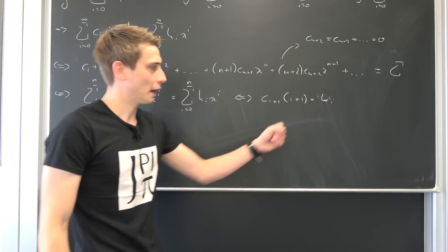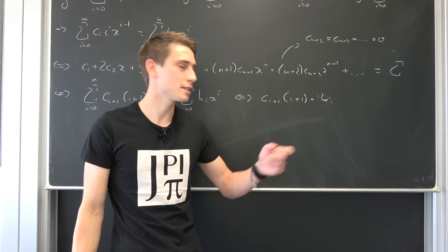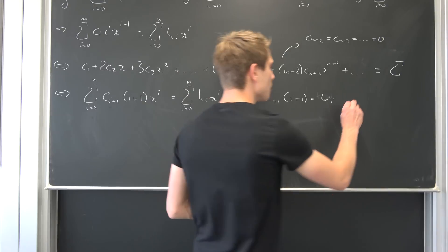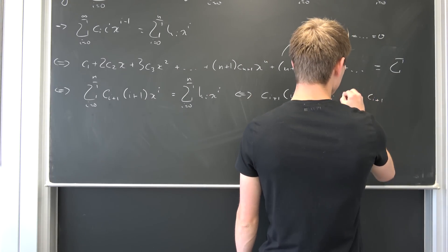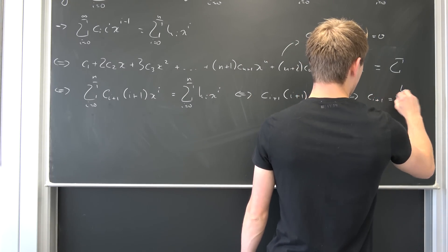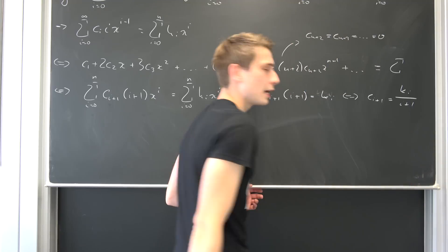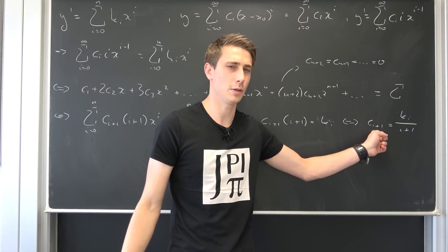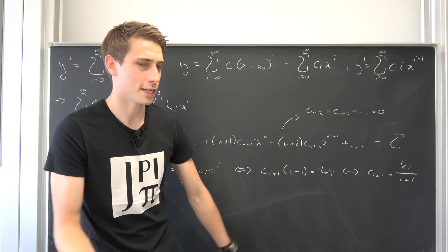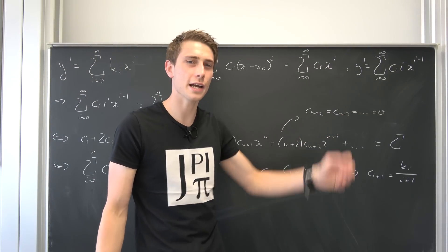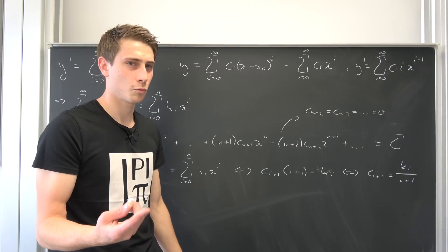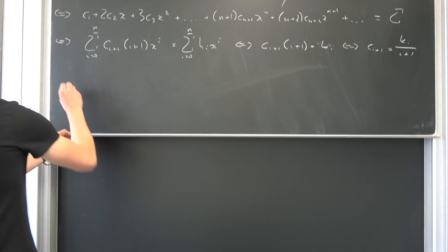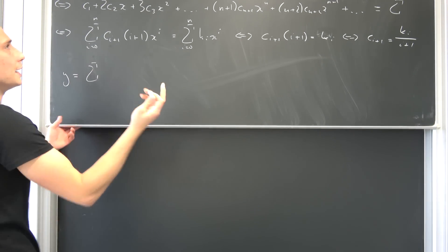Since i is a natural number, (i+1) is never going to be 0. So we can multiply both sides by the reciprocal of (i+1) to end up with c_{i+1} equals k_i over (i+1). That's quite nice because we have found an expression for c_{i+1}. But we have c_i in our sum for y, so we can't directly plug it in at the moment — we need to do some algebraic manipulation.